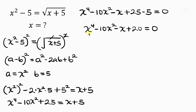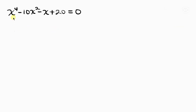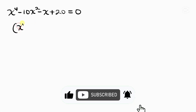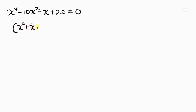We now have a quartic equation with no cubic term. Most students give up at this point, but a quartic equation without a cubic term can be factorized as (x squared plus x plus p) times (x squared minus x plus q).